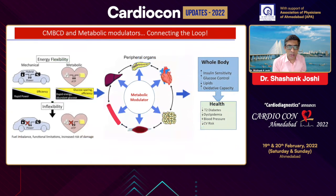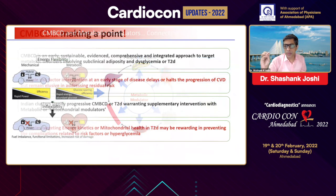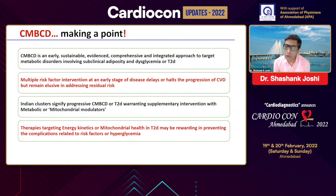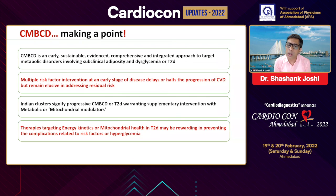When connecting the loop from metabolic flexibility to inflexibility — from rapid power efficiency to glucose-sparing and rapid energy-abundant glucose — we need metabolic modulators. The cardiometabolic-based chronic disease model is here to stay. An early, sustained, evidence-based, comprehensive, integrated approach targeting metabolic disorders involving subclinical adiposity and dysglycemia can delay or halt progression of cardiovascular disease. We are getting emerging newer therapies targeting energy kinetics or mitochondrial health which may correct glucose and heart simultaneously. Thank you for the opportunity to discuss this unique topic.